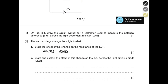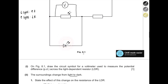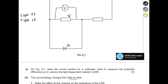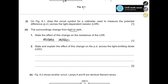State and explain the effect of this change on the potential difference across the LED. The resistance of the LDR has increased, so the overall total resistance has also increased. According to Ohm's law, V = IR, voltage is directly proportional to resistance. When total resistance increases, voltage also increases. Therefore, the potential difference across the LED increases because the total resistance of the parallel combination of LED and LDR has increased.